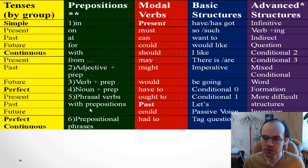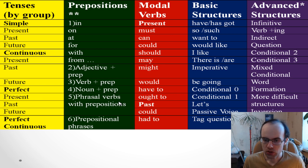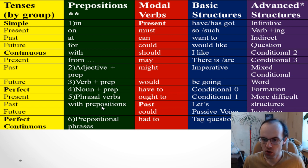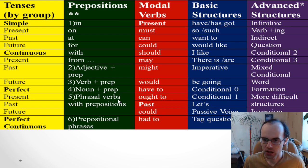In addition to adjective plus preposition, verb plus preposition, and noun plus preposition, you also need to know phrasal verbs — verbs with prepositions. For example, what's the difference between 'go on' and 'go away'? 'I'll go on learning English here' — 'go on' means to continue. 'My parents went away' means they went to a distant place, maybe another city or country.